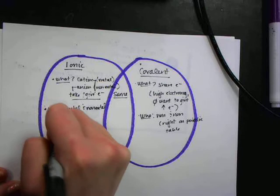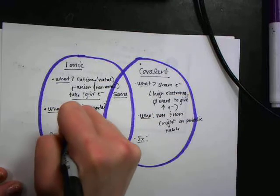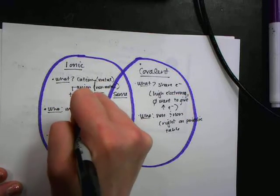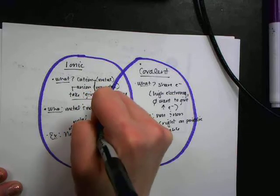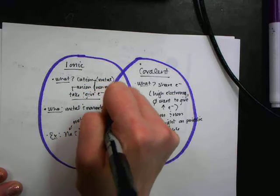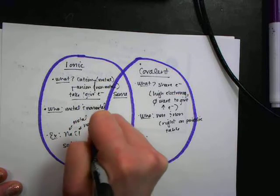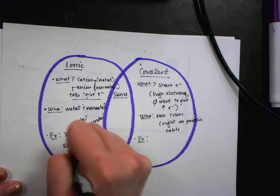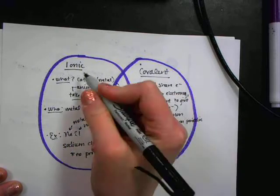An example of both would be over here in NaCl. So I have my metal in sodium, and my non-metal here with chlorine. And this is sodium chloride. So please notice that there are no prefixes when I'm naming over here with ionic bonds.